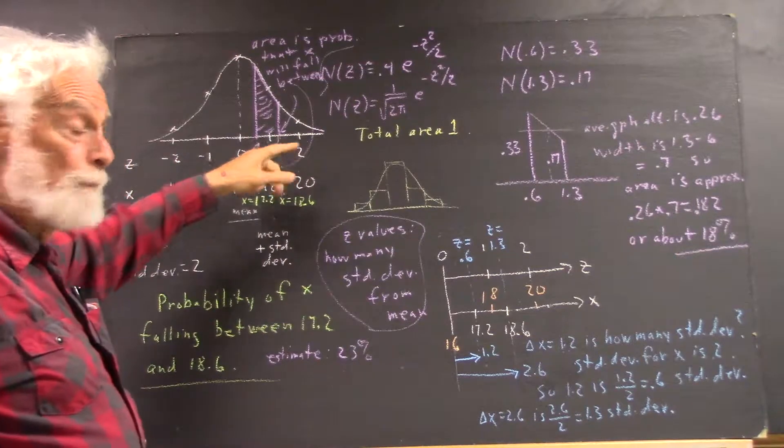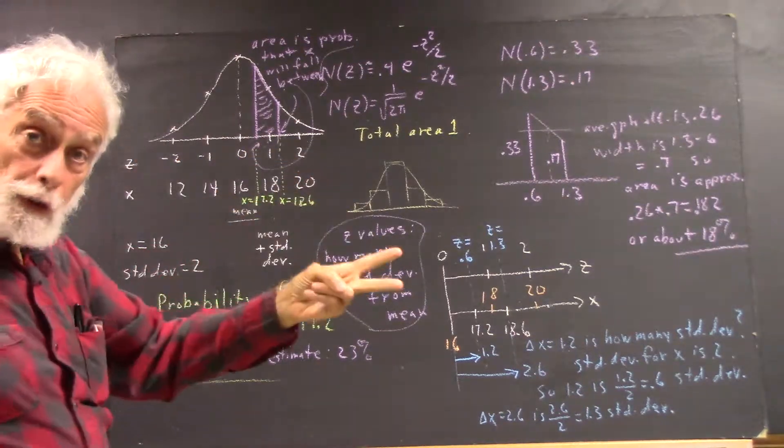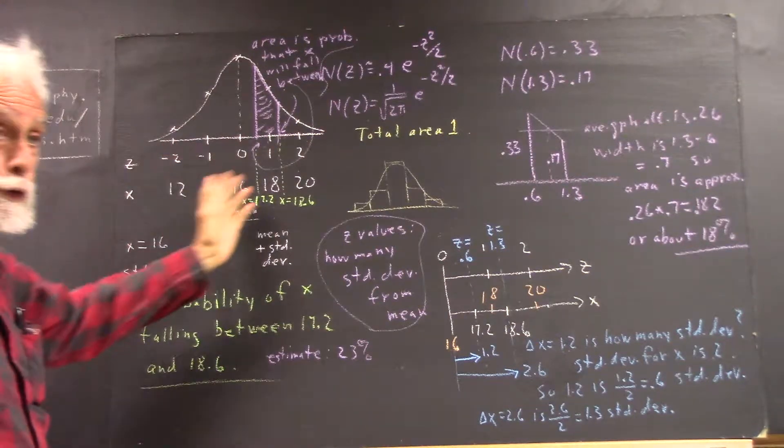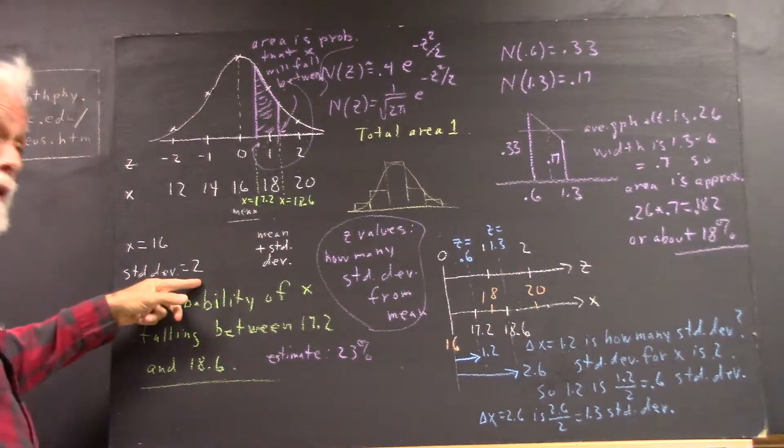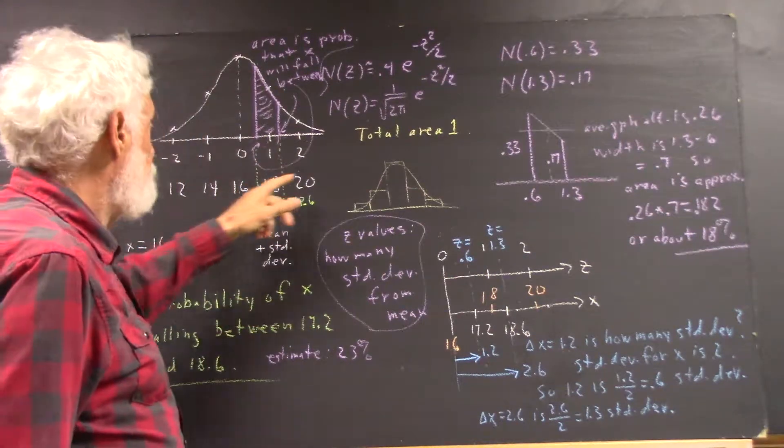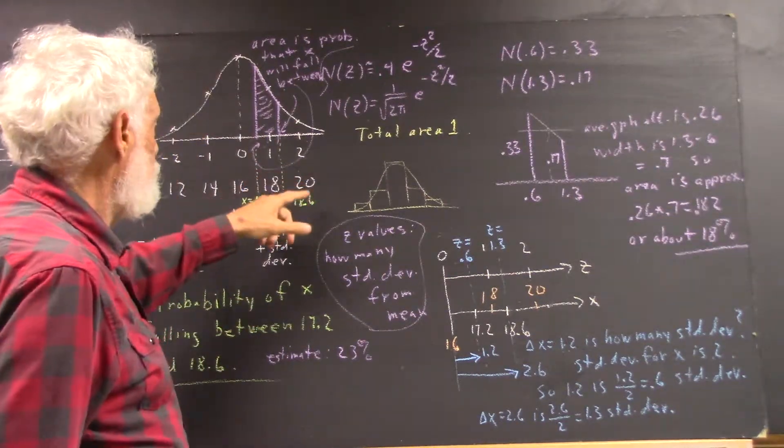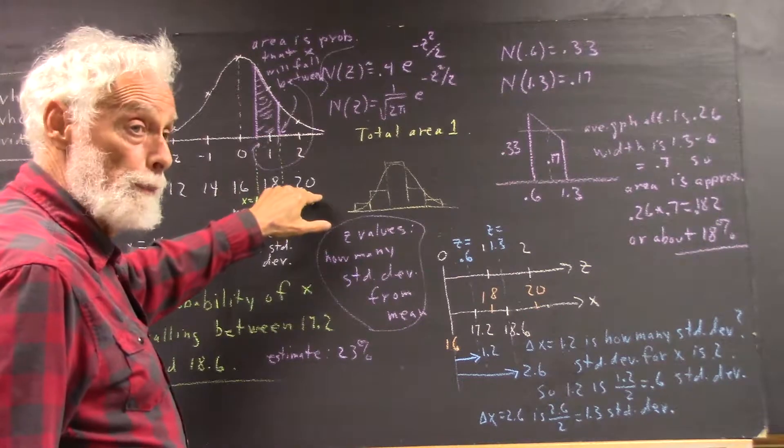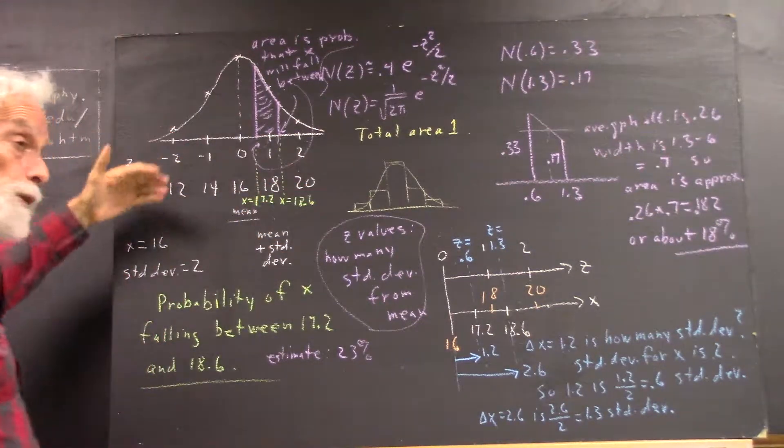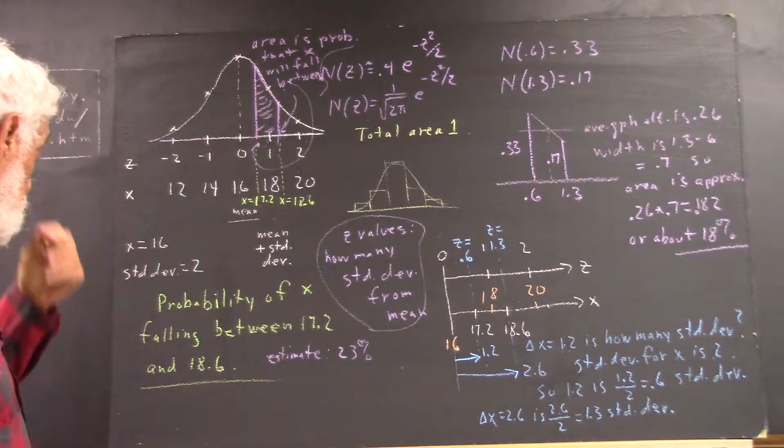When z is 2, how far are you from the mean? You're 2 standard deviations from the mean. What's the mean? 16. How far is 2 standard deviations? Well, the standard deviation is 2, so 2 standard deviations is 4, so we'd be 4 x units from the mean. So we'd have 20 here. That's not too difficult to understand. People seem to be doing pretty well with that.